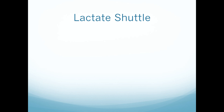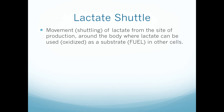There's a shuttle system around the human body where lactate can be sent and used as a fuel — this is called the lactate shuttle. The lactate shuttle is defined as the movement or shuttling of lactate from a site of production to other locations in the body where it can be used as a substrate in other cells. In the next slide I'll also describe another cycle called the Cori cycle.